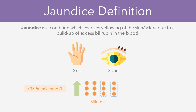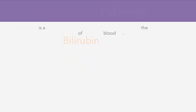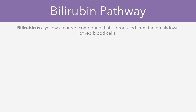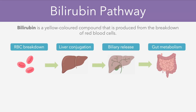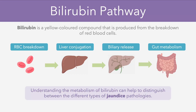If we want to have a good understanding of how jaundice develops, we first have to understand the bilirubin metabolism pathway itself. In essence, bilirubin is produced from the breakdown of red blood cells, and there are a few different stages involved in metabolism which result in the end products being formed. The reason why it's so crucial to understand the fundamentals behind the bilirubin pathway is that it can help to differentiate between the different types of jaundice pathologies.